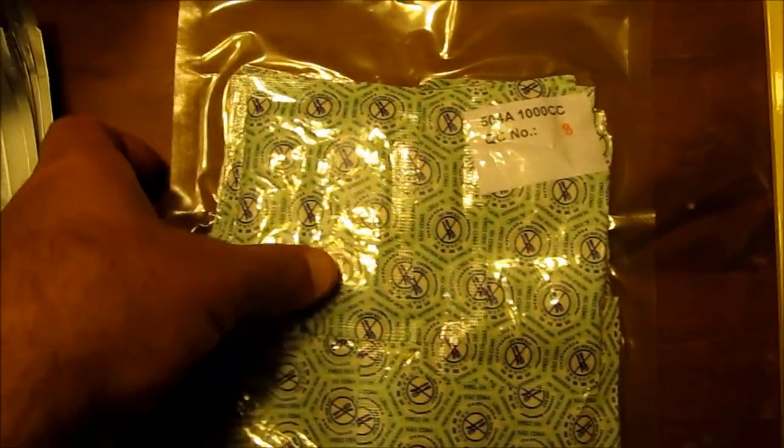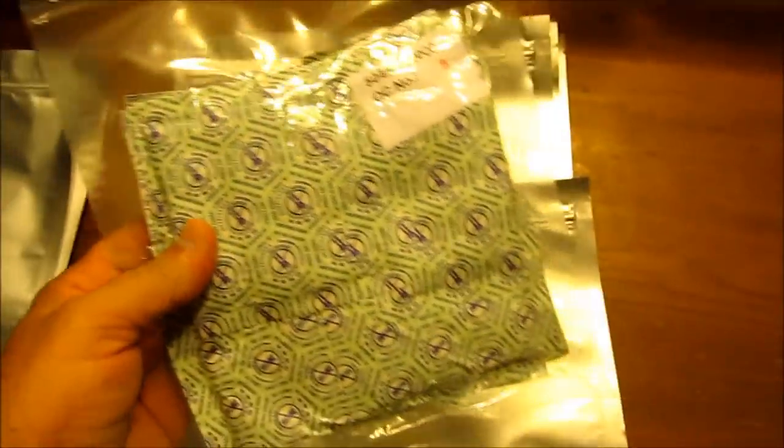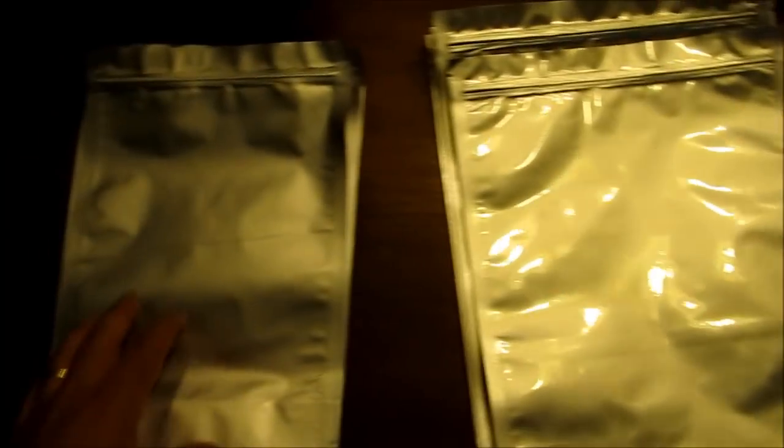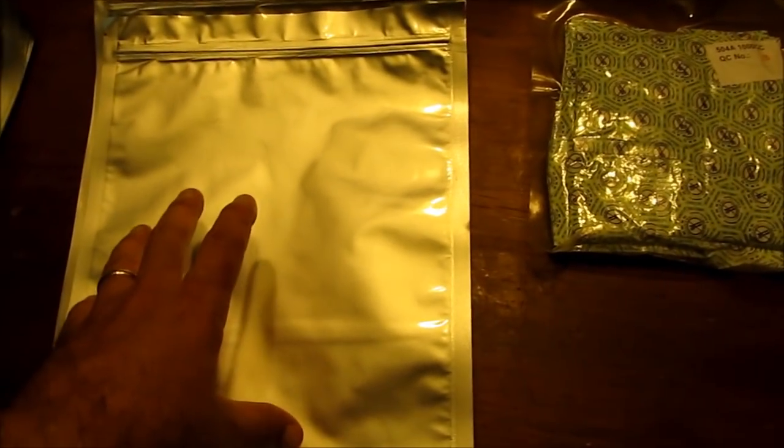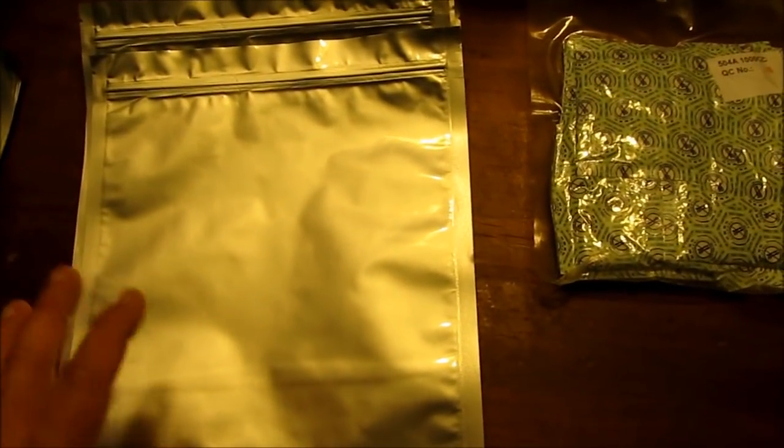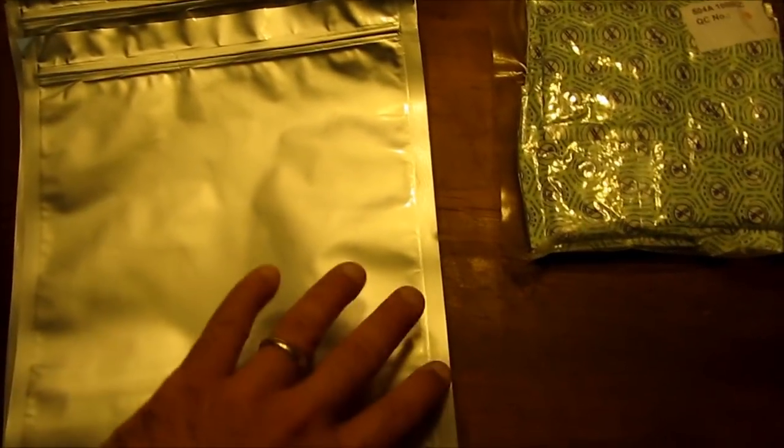We're using 1000cc oxygen absorbers. Now this may be a little overkill for what we're doing but I didn't want to have to buy one size oxygen absorber for the one gallon bags and then for the half gallon bags. I wanted to buy one that was big enough for the one gallon bags. I don't want to have to mix and match and then run out of one size oxygen absorber but still have some bags left over. So I bought 1000cc to cover everything.